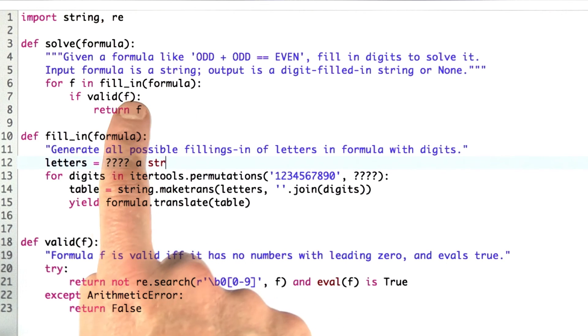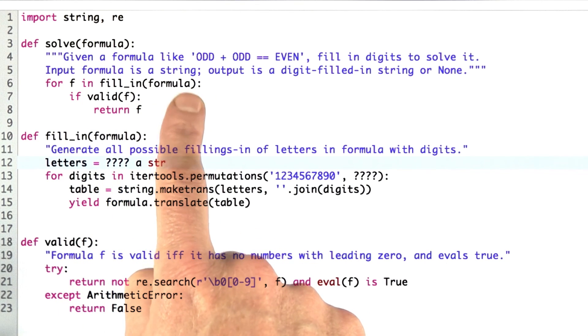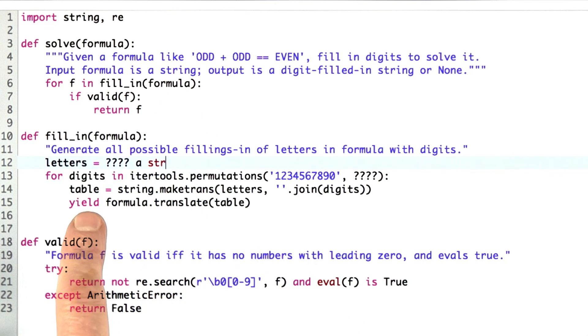And so if I do for f and fill in a formula, I ask for the first formula, and if it is valid, then I want to return it right away. I don't want to waste time calculating all the other possible fill-ins. So that's why a generator makes more sense here. So see if you can fill in these two missing pieces.